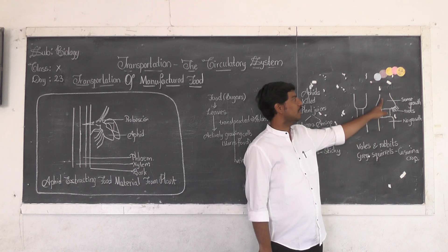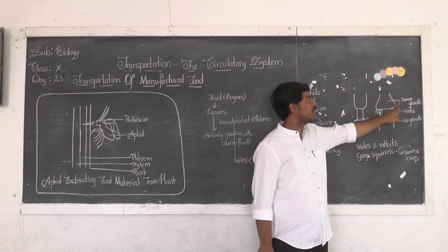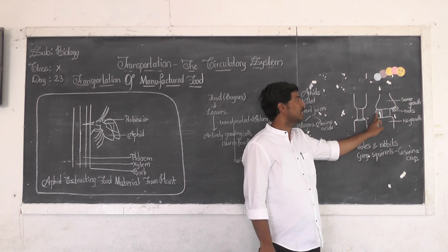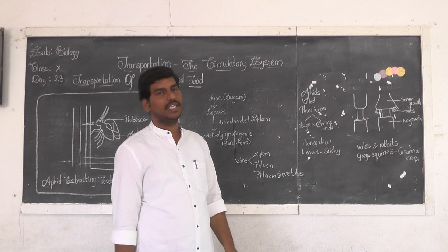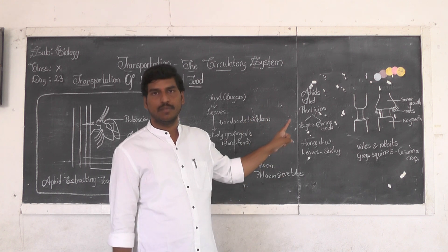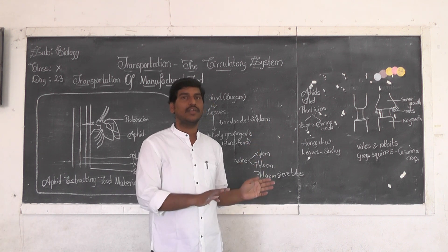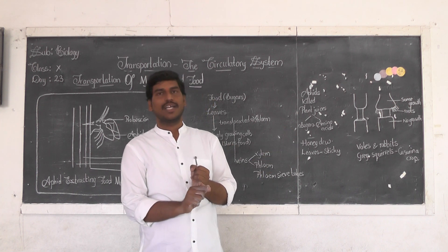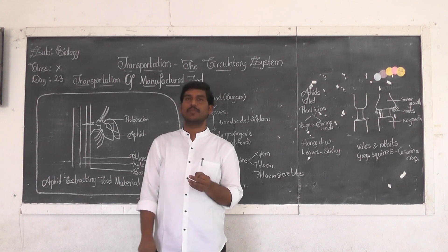Due to the broken continuity of phloem, the food coming down accumulates at that region. At the accumulated region you can see some growth being formed there. Because of this accumulation and the production of aerial roots, artificial propagation of plants can take place. Cutting, layering, and grafting are the three different types of artificial propagation of plants that you have studied in Class 7.